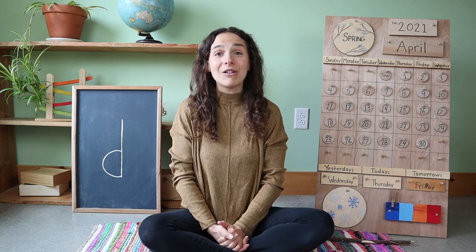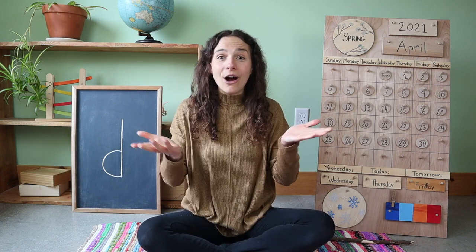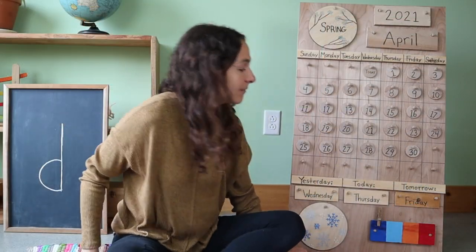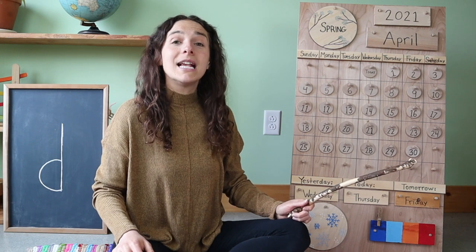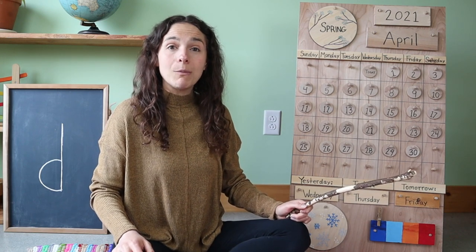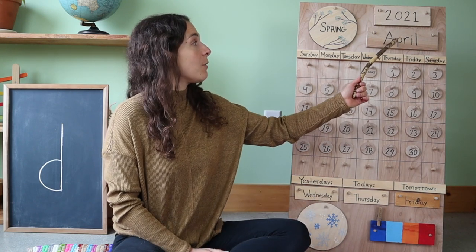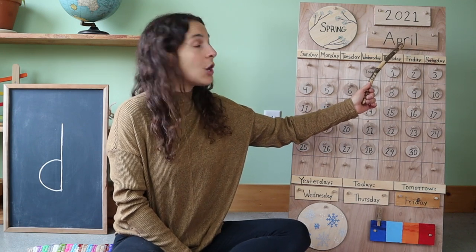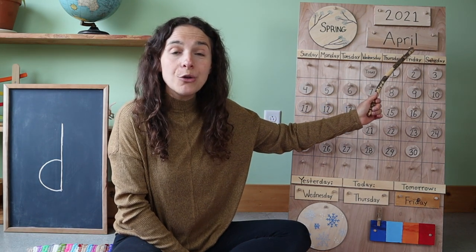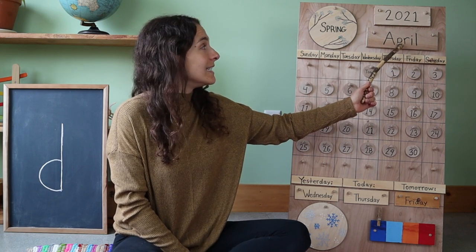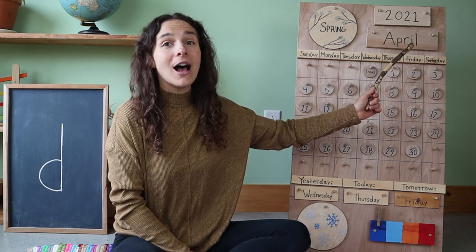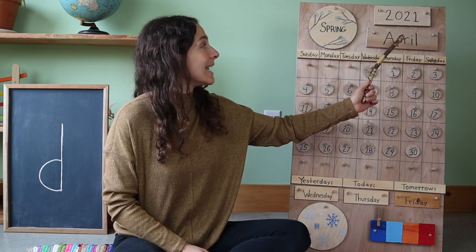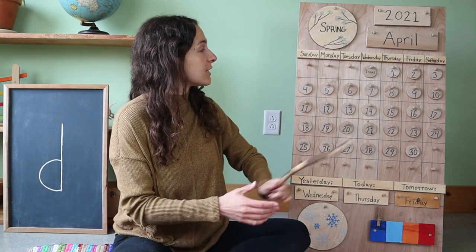I hope that you all are having a wonderful day so far. Are you ready for circle time? Let's get started. The first thing that we do is begin with the date. When we see the date, we start up with the month right up here. We started a brand new month today. Today is the first day of the month of April — April 1st.